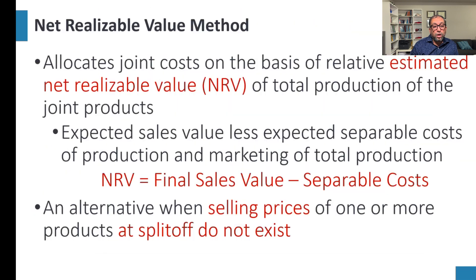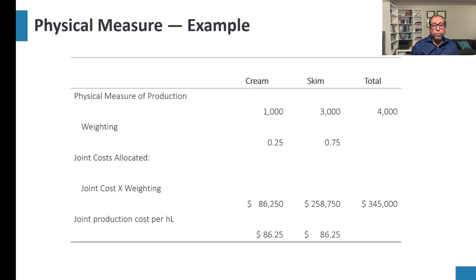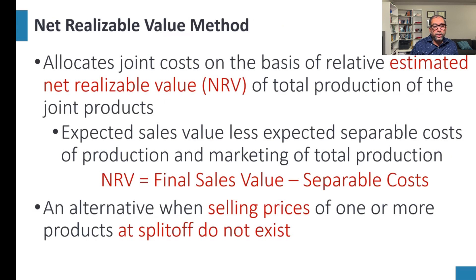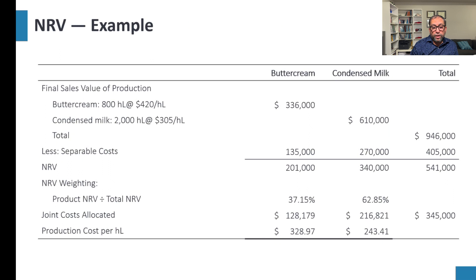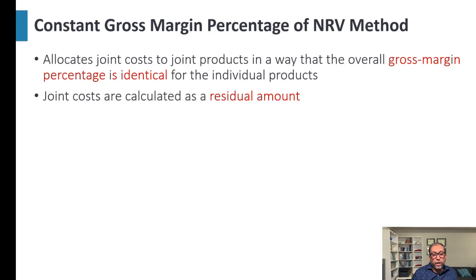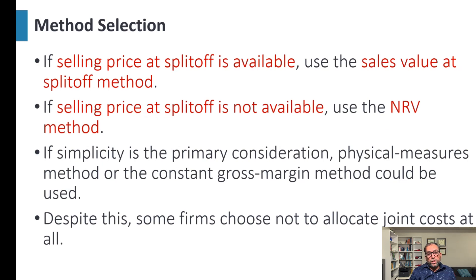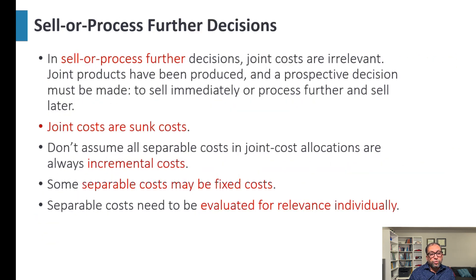In summary, we discussed four methods: physical measure method, sales value at split-off method, net realizable value (NRV) method, and constant gross margin percentage of NRV method. As for which method is best: if selling price at split-off is available, use the sales value at split-off method — that's the best. If selling price at split-off is not available, use the NRV method. If simplicity is the primary consideration, the physical measure method or constant gross margin method could be used. Despite this, some firms choose not to allocate joint costs at all.